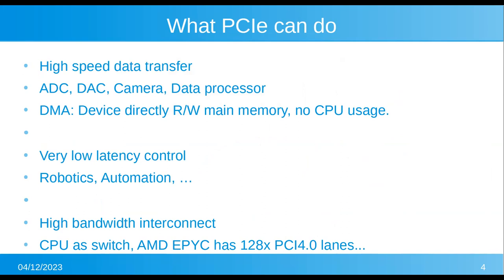That's why the new AMD EPYC platform has so many PCI lanes — those server users are using PCI Express as an equivalent to Ethernet, but with much much lower latency and simpler logic.